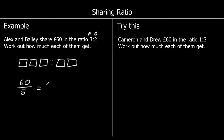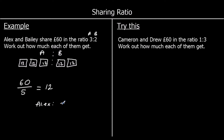60 divided by five is 12. So that means every box has got to have the same amount in it, and that's going to be £12. So I'm just going to write 12 in each of the boxes. These are Alex's boxes, and these are Bailey's boxes. Alex has got three lots of 12 — three times 12 — which makes £36.